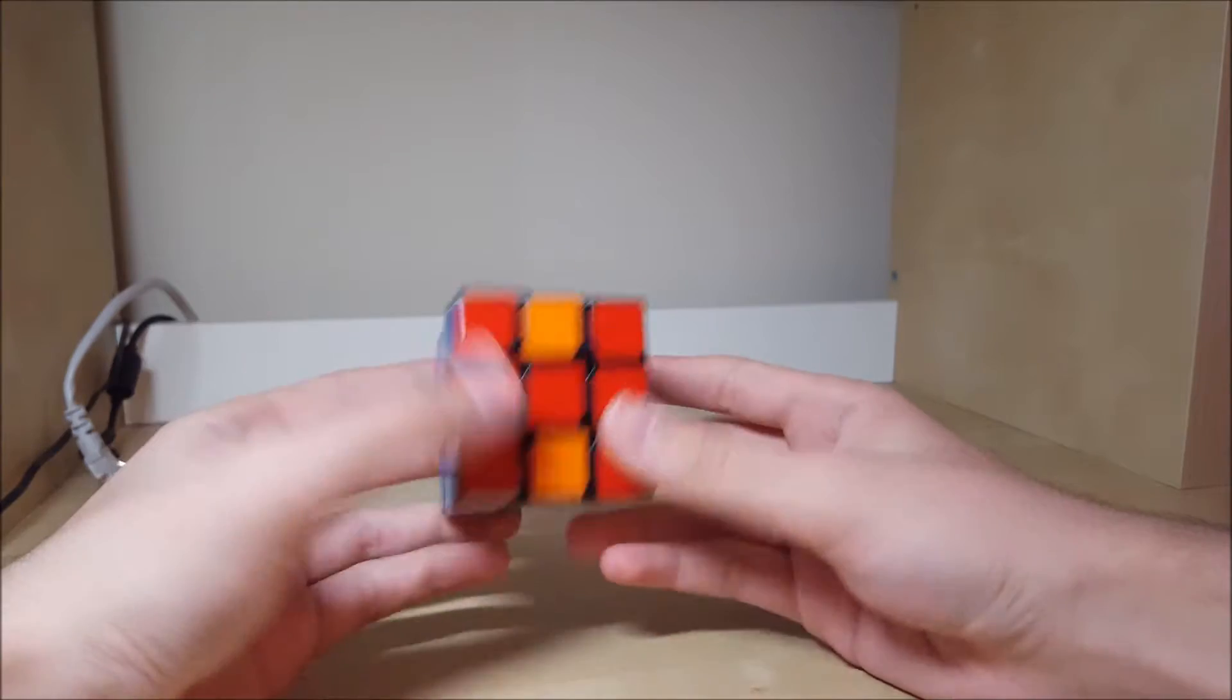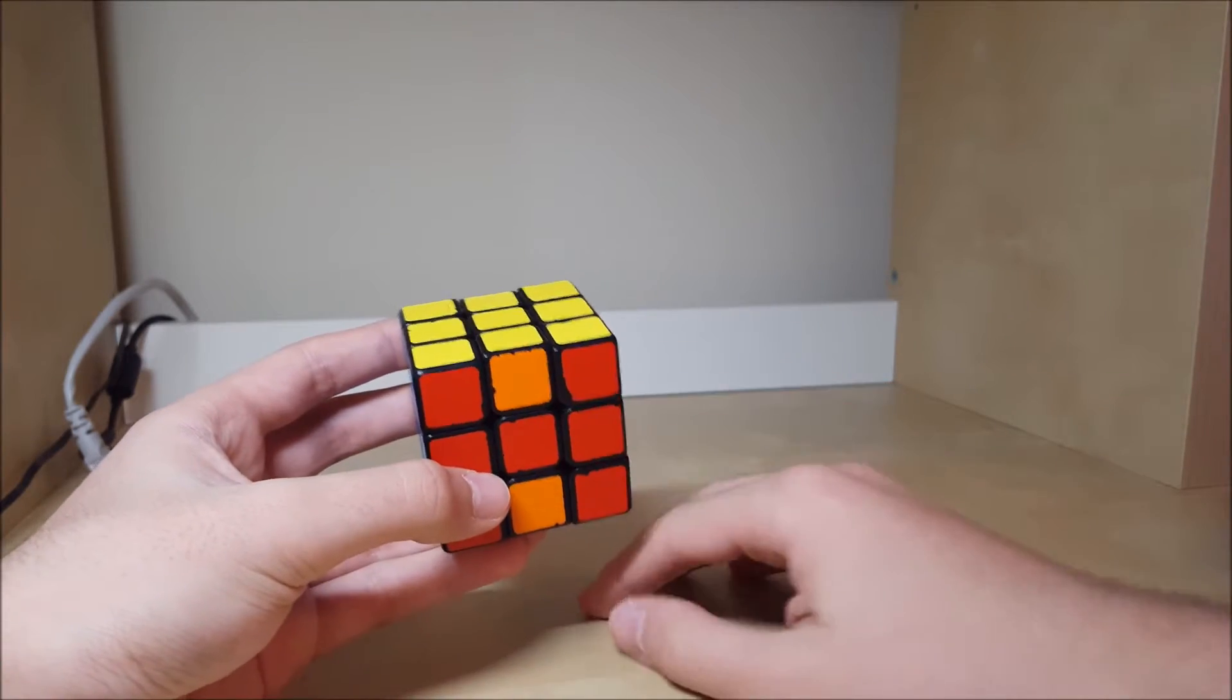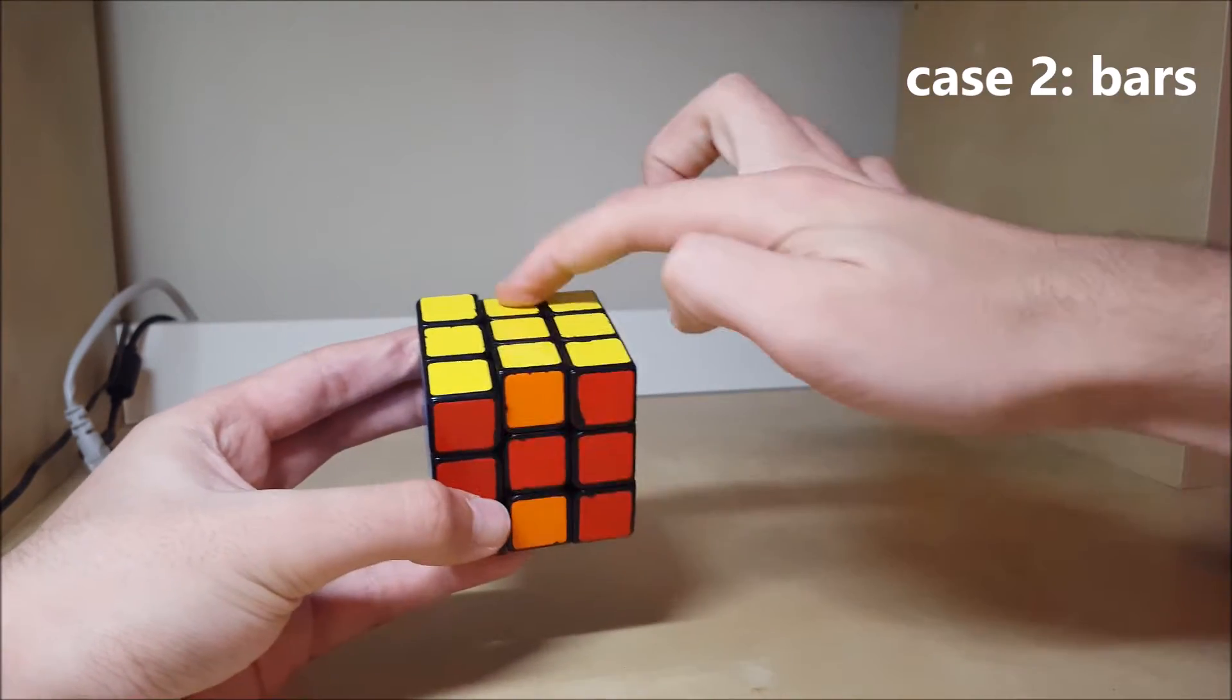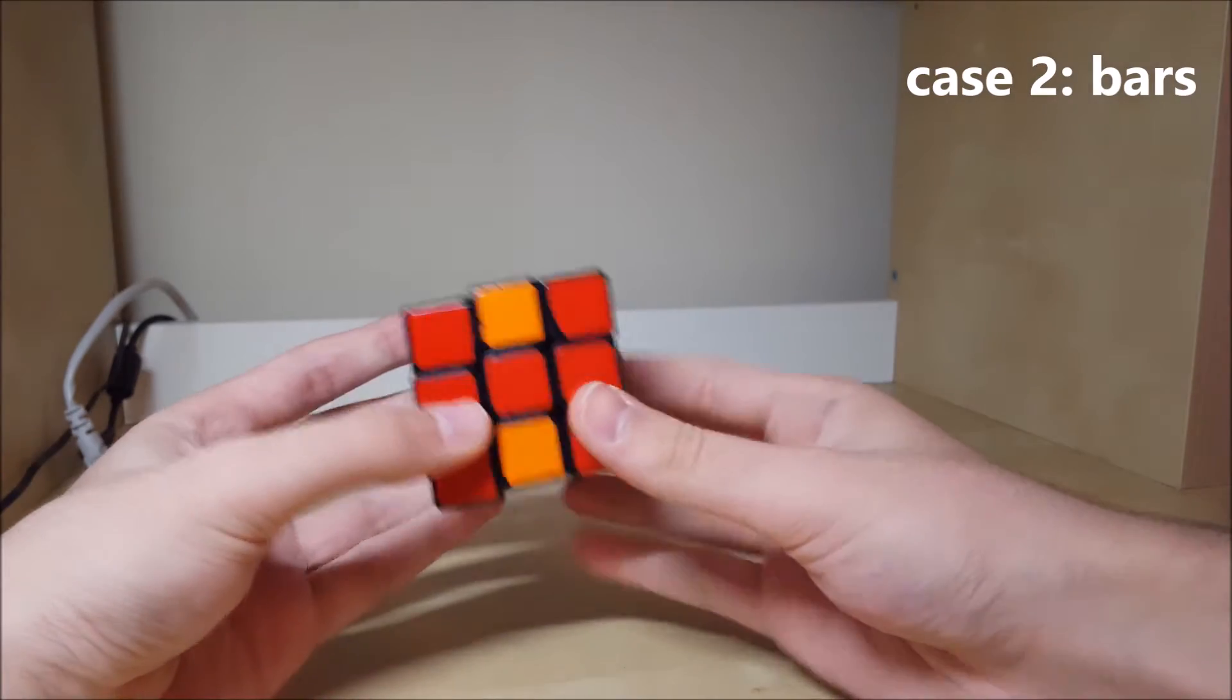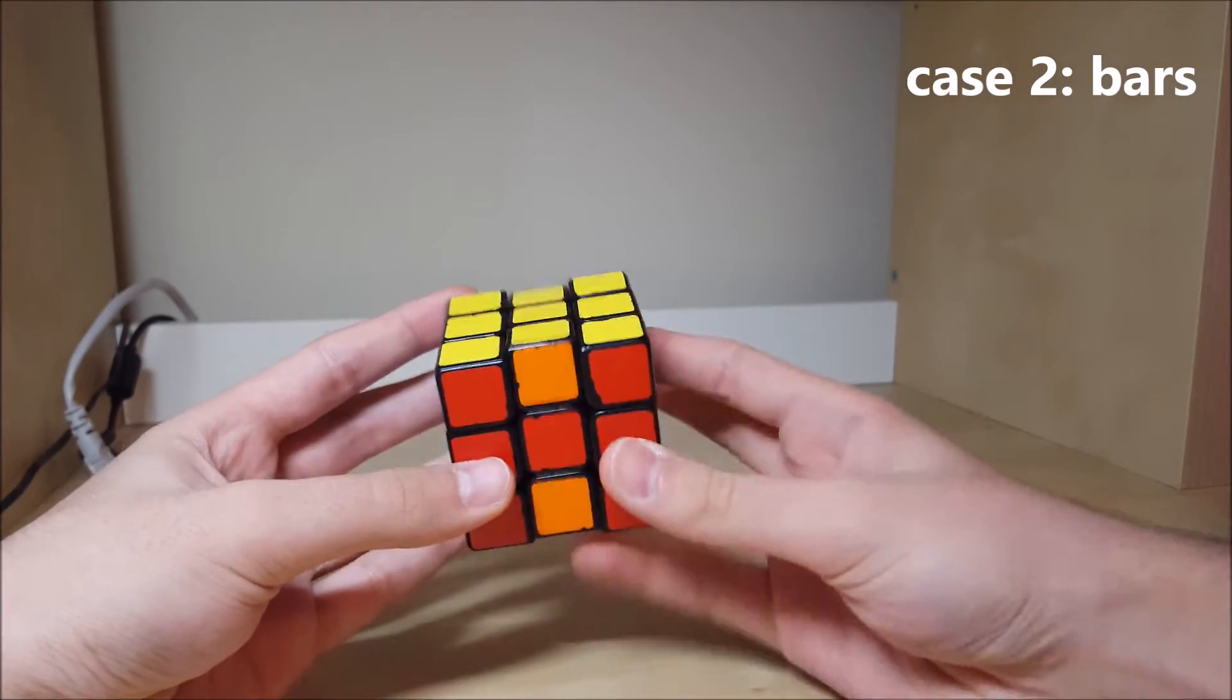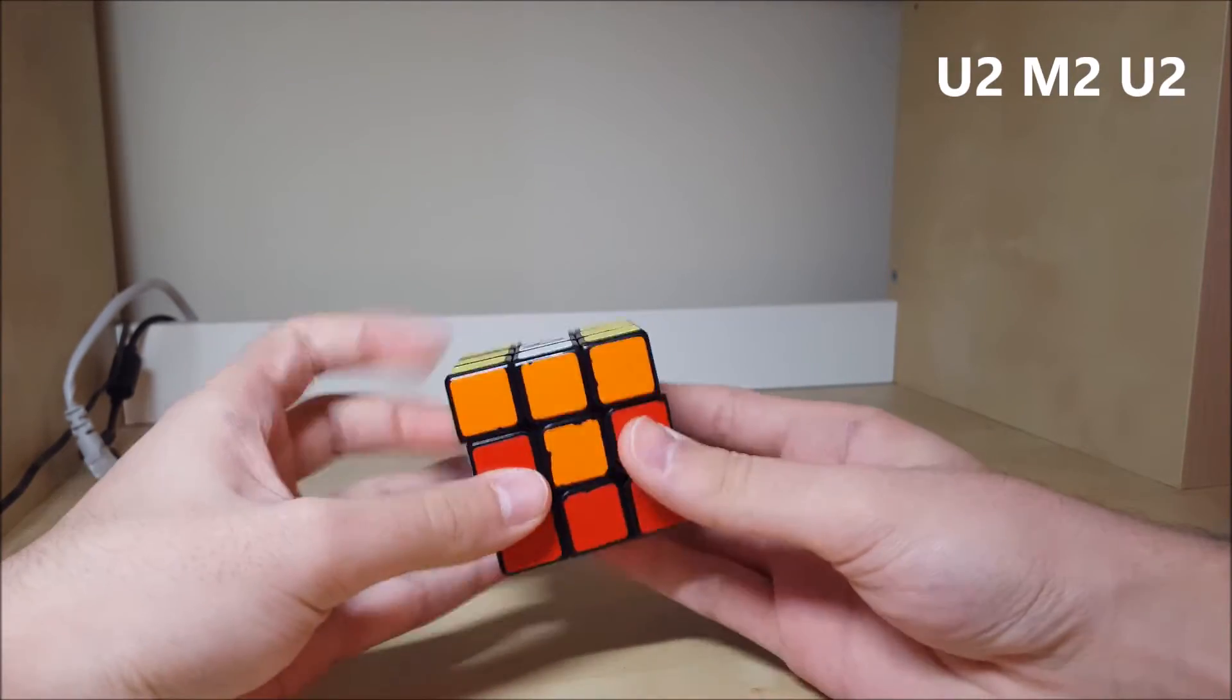Second case is what I'm going to be calling bars. There are these bars of yellow on top and white. It could be like this or like this, and you solve it by U2, M2, U2.